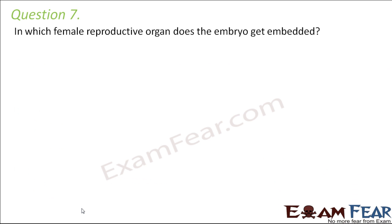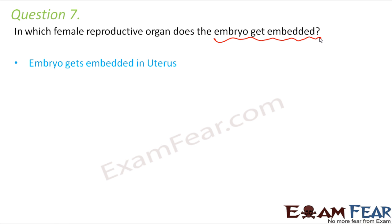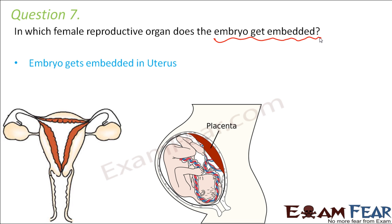Question number seven: in which female reproductive organ does the embryo get embedded? This is where embryo implantation takes place, where the baby will remain for nine months. It is the uterus. Normally the uterus is like a small pouch, but when the baby comes in it can expand so much because of its muscular walls.